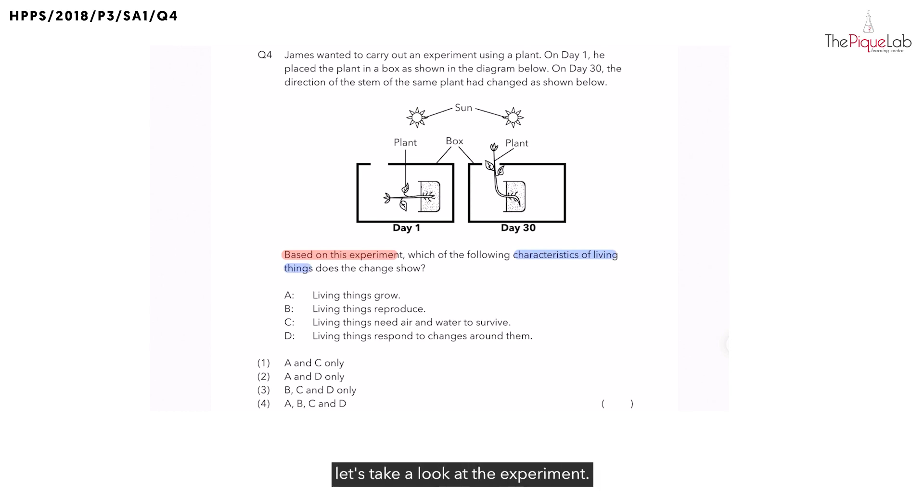To answer this question, let's take a look at the experiment. On day 1, at first, you can see the plant was growing upright. But then on day 30, they said the direction of the stem had changed. In fact, this time, where do you notice the plant is growing towards? You can see the plant is growing towards the hole in the box. And what do you think it's trying to grow towards? It's actually growing towards the sun. So let's write this out. From day 30, we can see that the plant grew towards the sun.